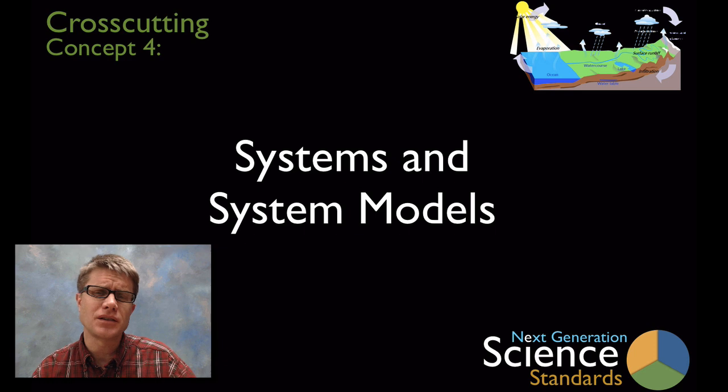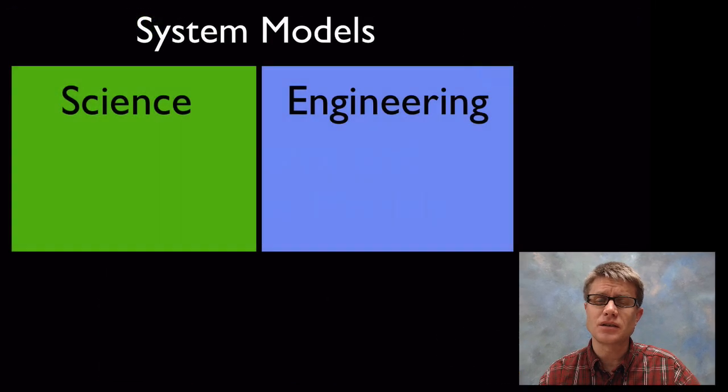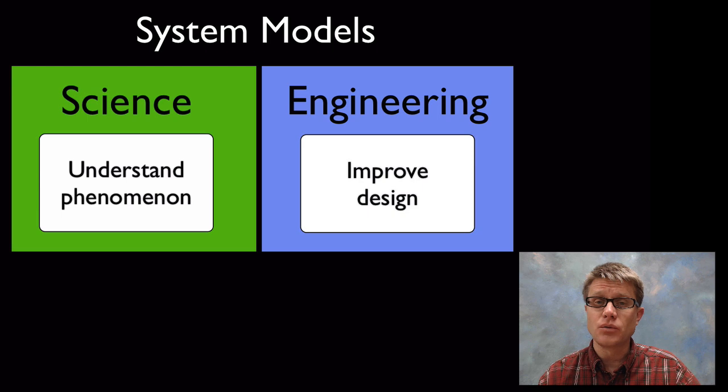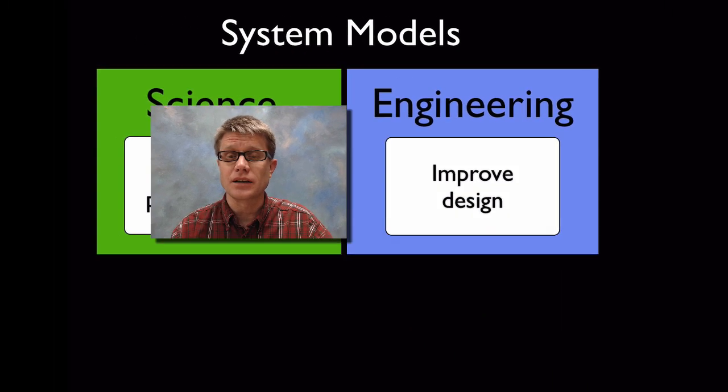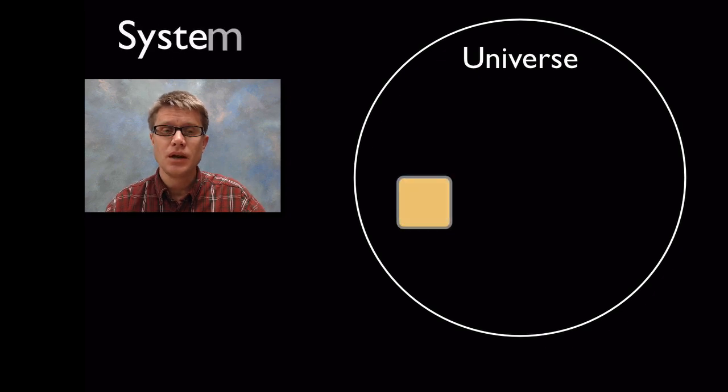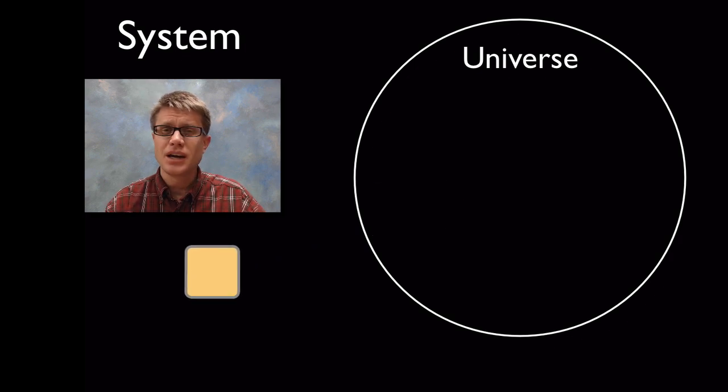What is a system? Basically a system is anything that's separate from the universe and it allows us to study it and it makes sense. Because in science, systems and system modeling allows us to understand phenomena. In engineering we can build systems and by improving those it allows us to improve design. We study the universe, we try to understand how the universe works, but that's too big. So how do we make sense of it? We divide it into what's called systems. A system is a portion of the universe that's separate from the universe, and it just makes it easier for us to understand how it works.